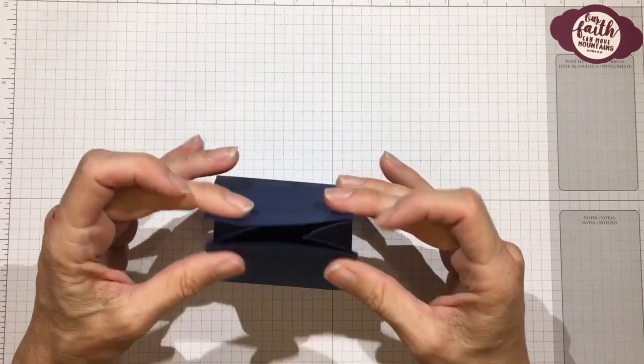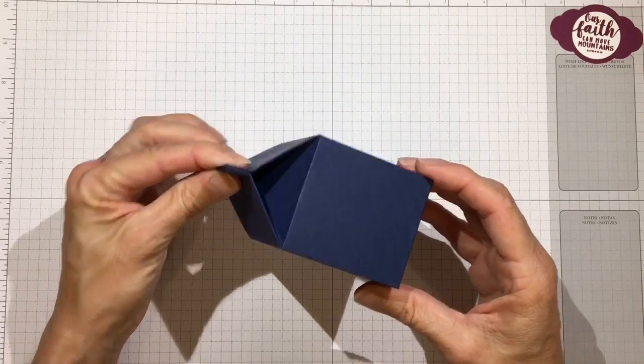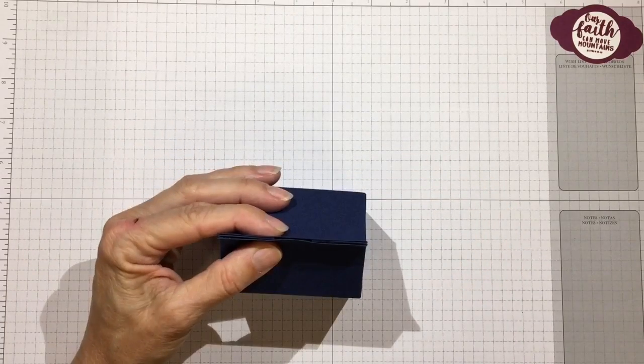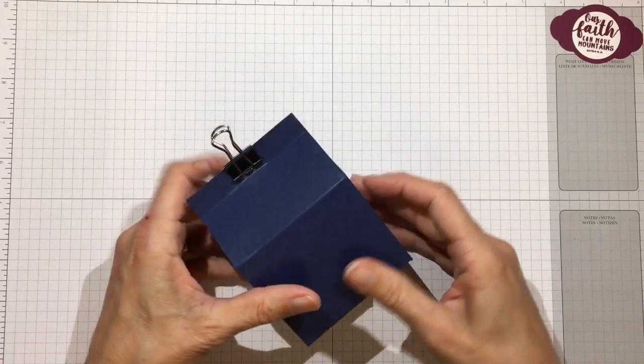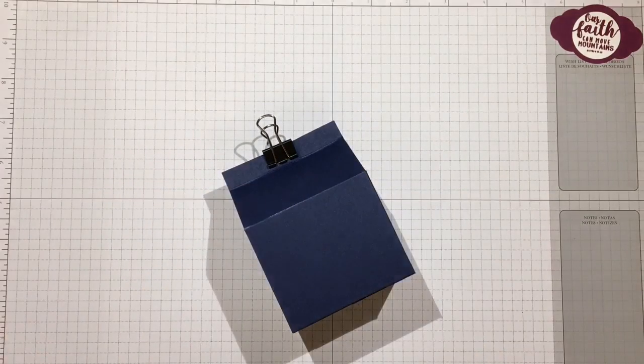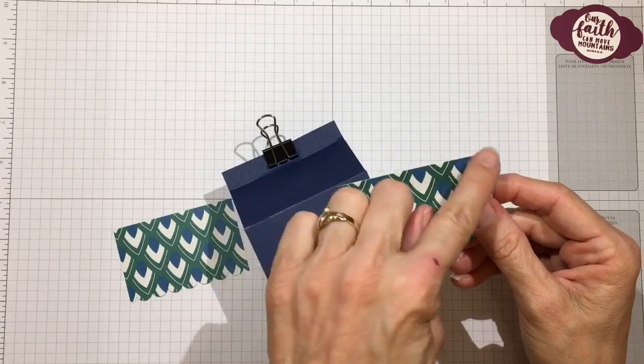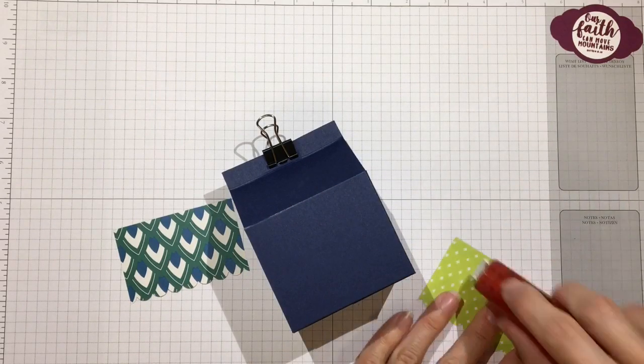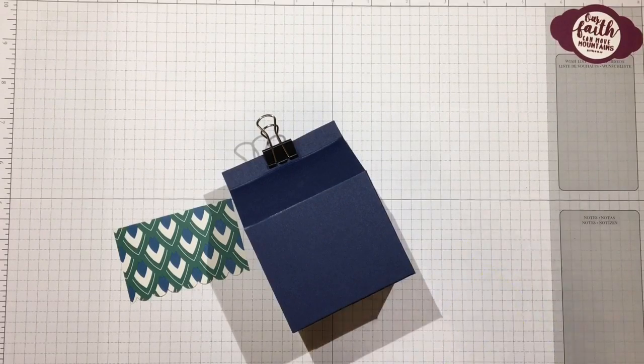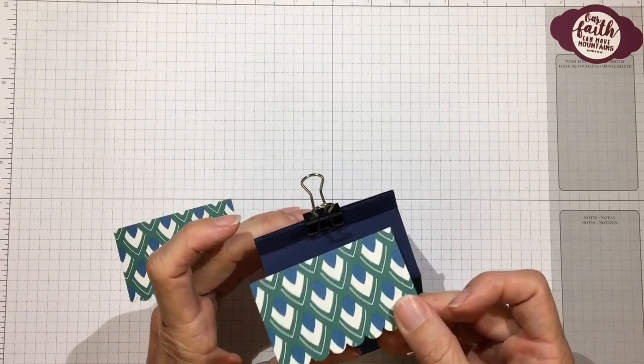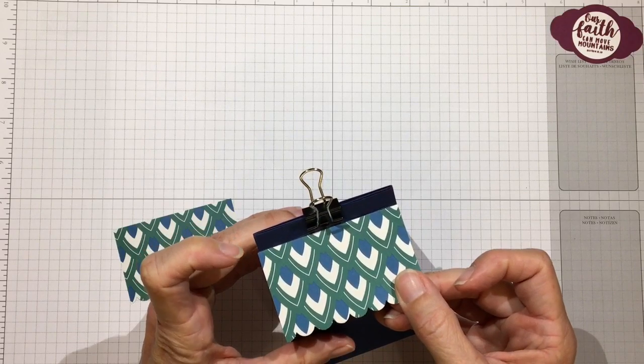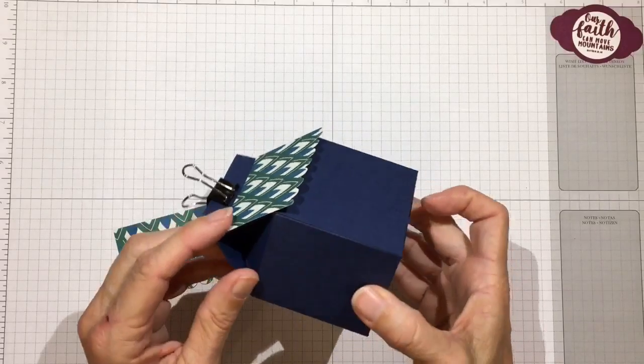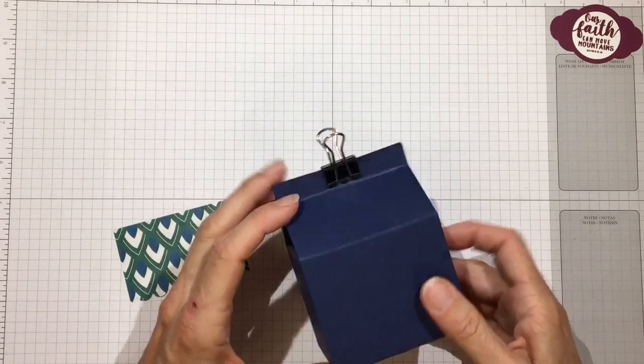Now we're going to kind of squeeze it down into the milk carton shape, and because we scored those lines it folds down pretty easily. For now I'm just going to go ahead and clip it so it holds together while I'm putting the roof panels on. As I said, these are two inches by three inches, and I went ahead and scalloped the edge. We'll just go ahead and put those on, and I snug it right up to the score line. It makes it really cute. Let me do the other side as well.